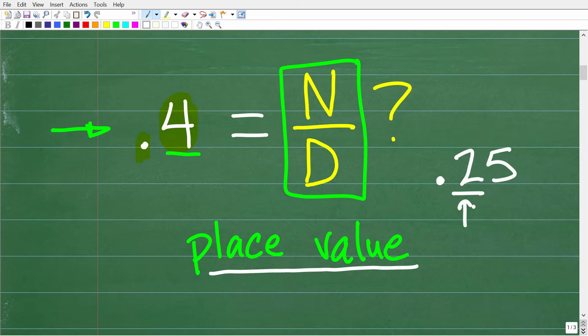So here, the two is in the tenths place and the five is in the hundredths place. The way we say this decimal is 25 hundredths. We always refer to this last digit.